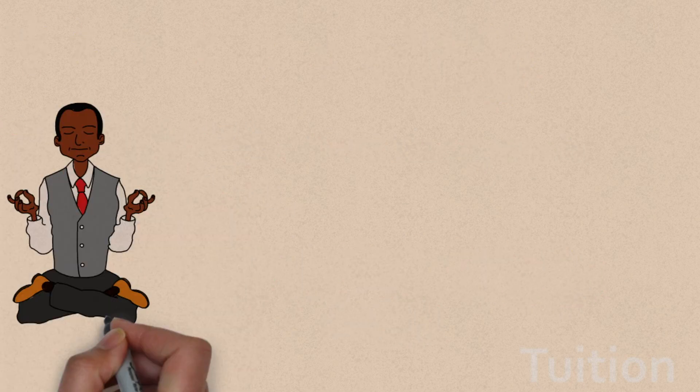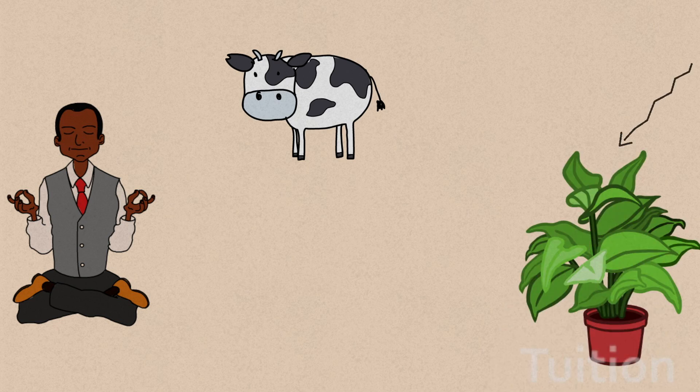All living organisms including plants get the energy they need to live from a chain of chemical reactions called respiration.